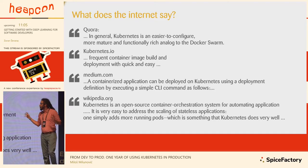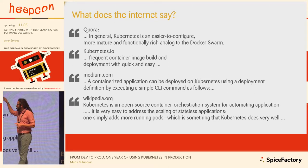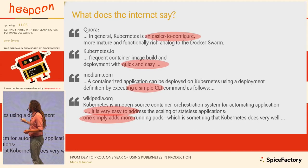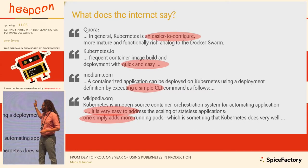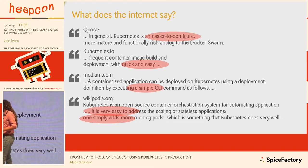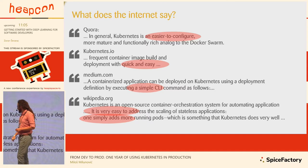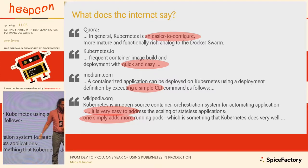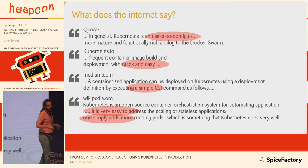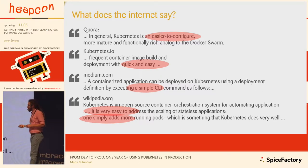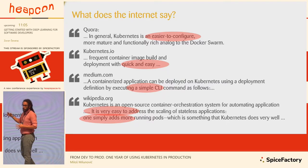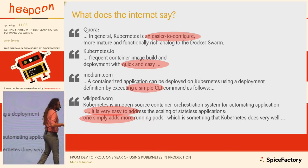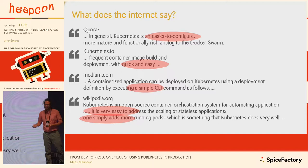What does the internet say about Kubernetes? This is an opinionated set of quotes taken out of context, but there's one theme: it's always stated that Kubernetes is easy to configure, quick and easy to deploy, has simple CLI commands, and it's very easy to address scaling — you can simply add more pods. But I want to talk about what actually got more complicated, because while it's easy to do these things with Kubernetes, other things increased in complexity.